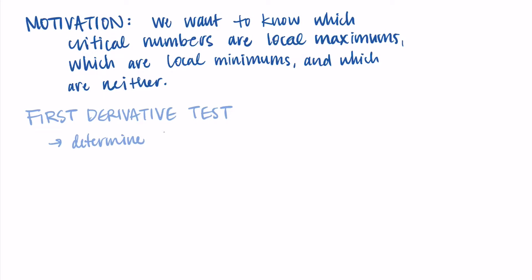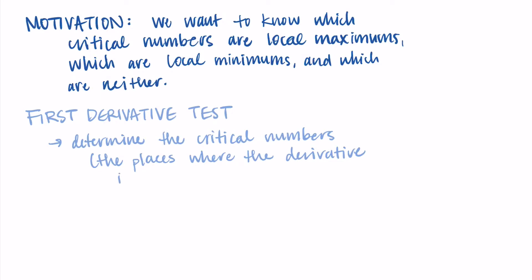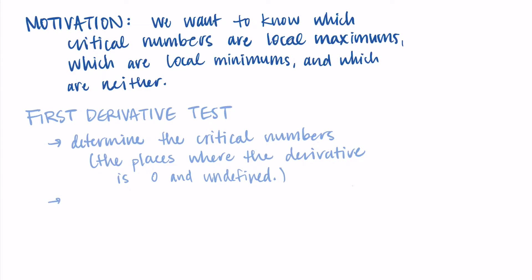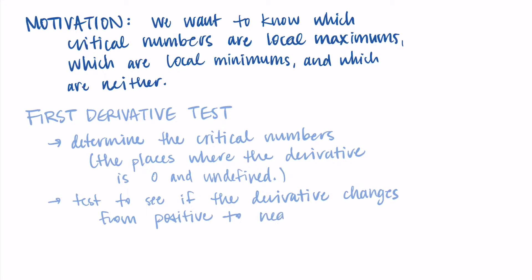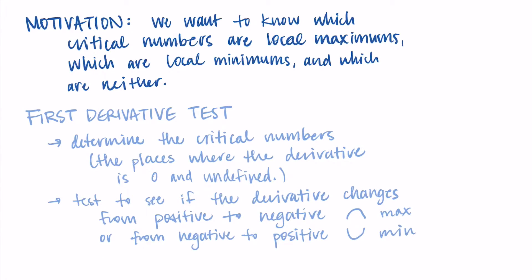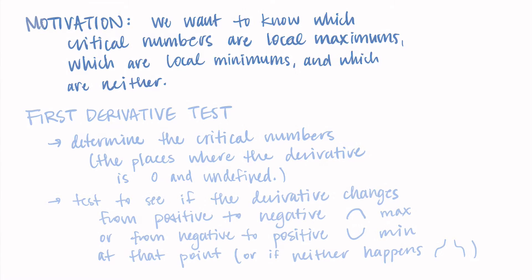The first derivative test has two goals. The first goal is to determine the critical numbers — the locations where the derivative is equal to zero and where the derivative is undefined. The second task is to classify the critical numbers, determining which are local maximums and which are local minimums. We test whether the derivative changes from positive to negative (local maximum) or from negative to positive (local minimum). We also note places where neither occurs — where the function levels out but continues increasing or decreasing.